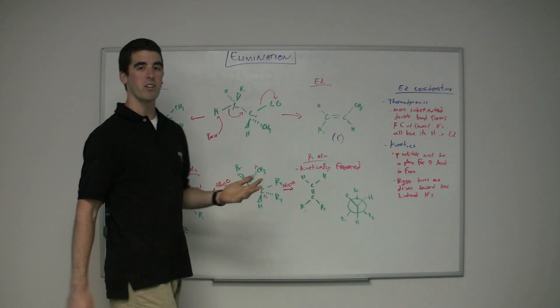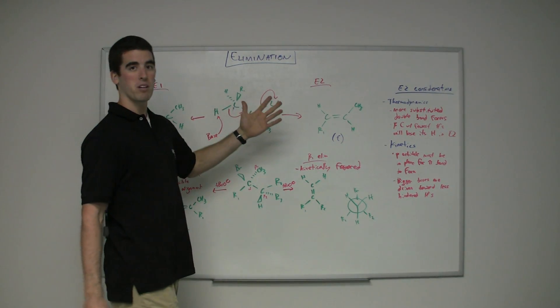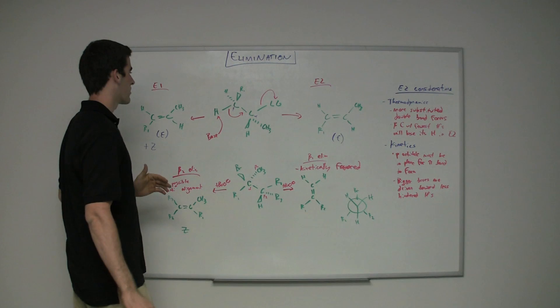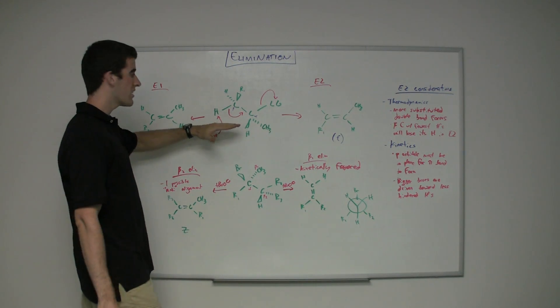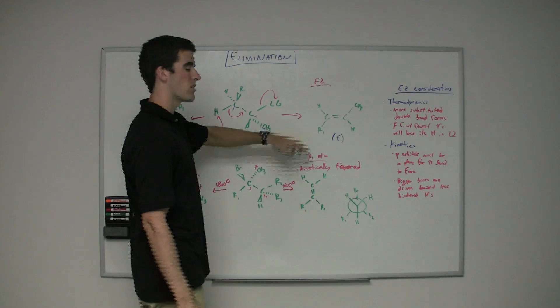So with elimination, you have either E1 or E2 reactions that can happen. E2 is that bimolecular reaction. E1 is the unimolecular, where the leaving group leaves at the beginning, and it's two steps to form the double-bonded product. The E2, it's all in one step.